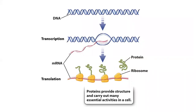Let's start with the central dogma. The central dogma, as we know, is the synthesis of protein from DNA, which is called the central dogma of the cell. In the central dogma, when DNA is transcribed, we call it transcription, and we call the process from RNA to protein translation.